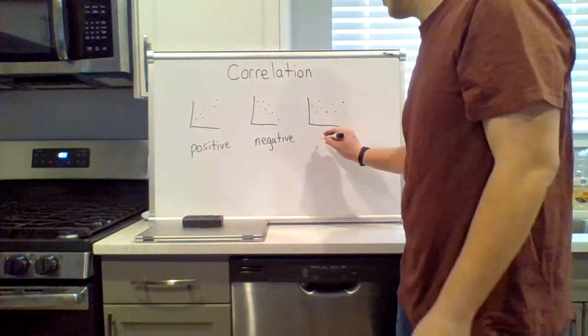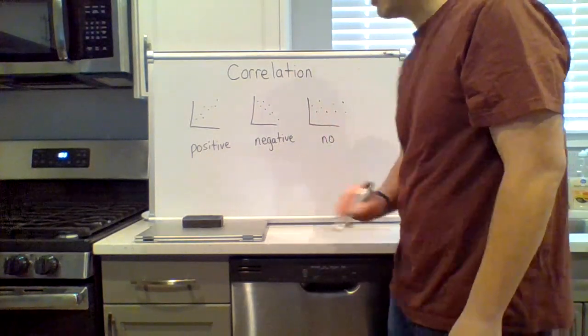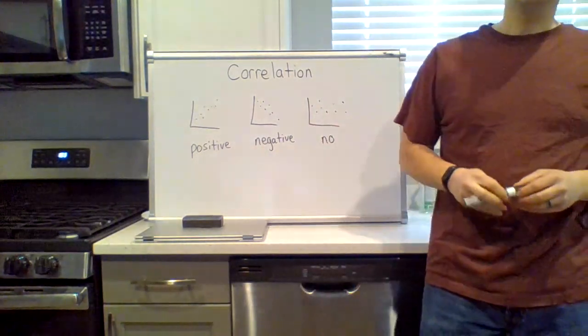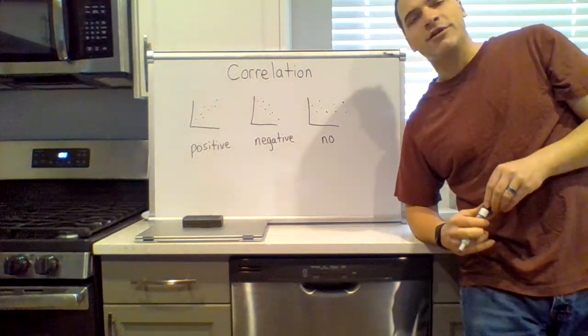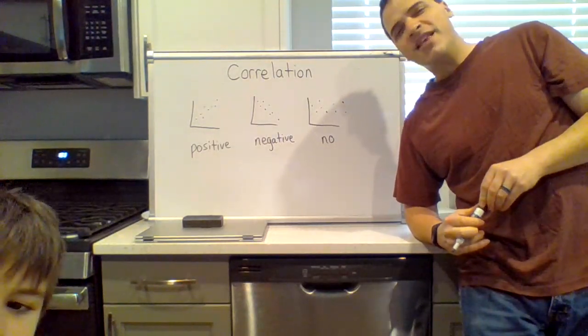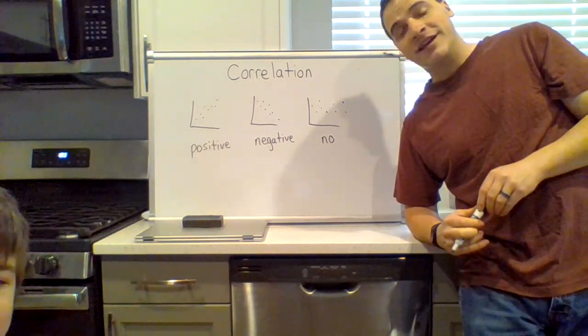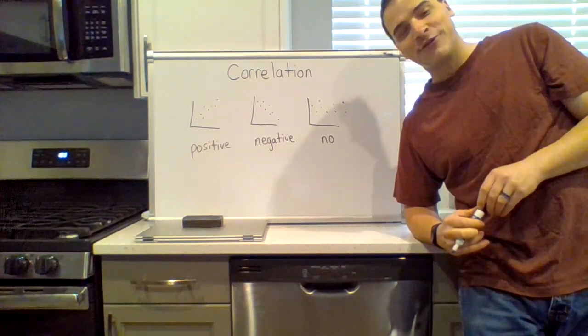On the assignment you'll be asked to identify which type of correlation is it from a graph. But also slightly trickier questions. Yeah, you can see his paw patrol toy. What variables would lead to a positive correlation?